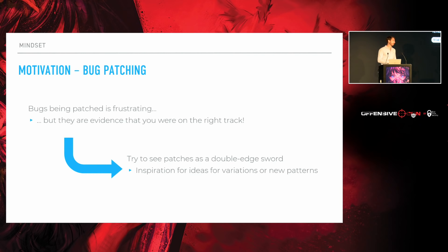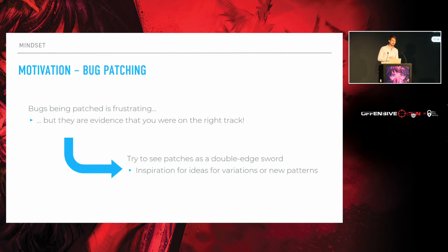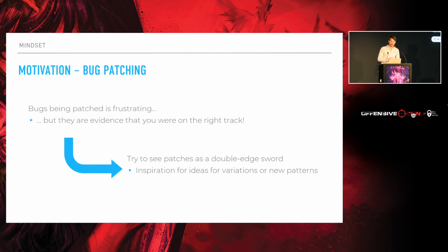I can't talk about motivational problems without talking about bug patching, because it can be pretty brutal. Bugs being patched is a really frustrating experience, but if a security patch comes out for something you already found, it's also kind of evidence that you're on the right track. I had an experience early on at Azimuth where I'd found two vulnerabilities in Chrome and they got patched two days later, which caused me to go on what we call at Azimuth a rage audit — where you basically try to avenge your dead bugs by looking at the code obstinately. I was able to find another vulnerability and write an exploit for it.